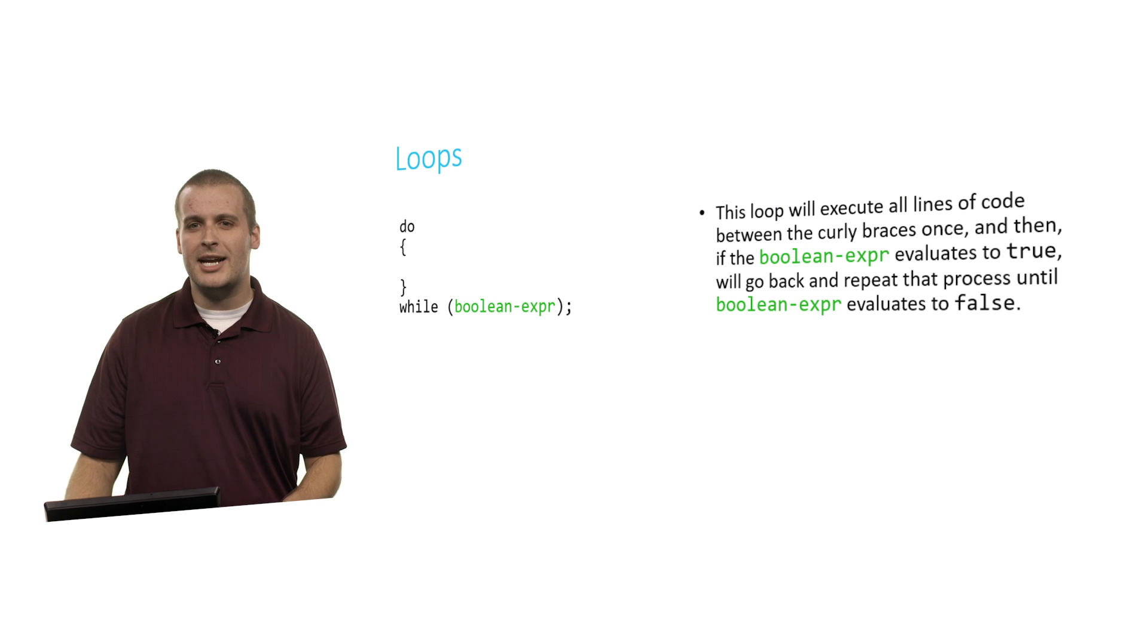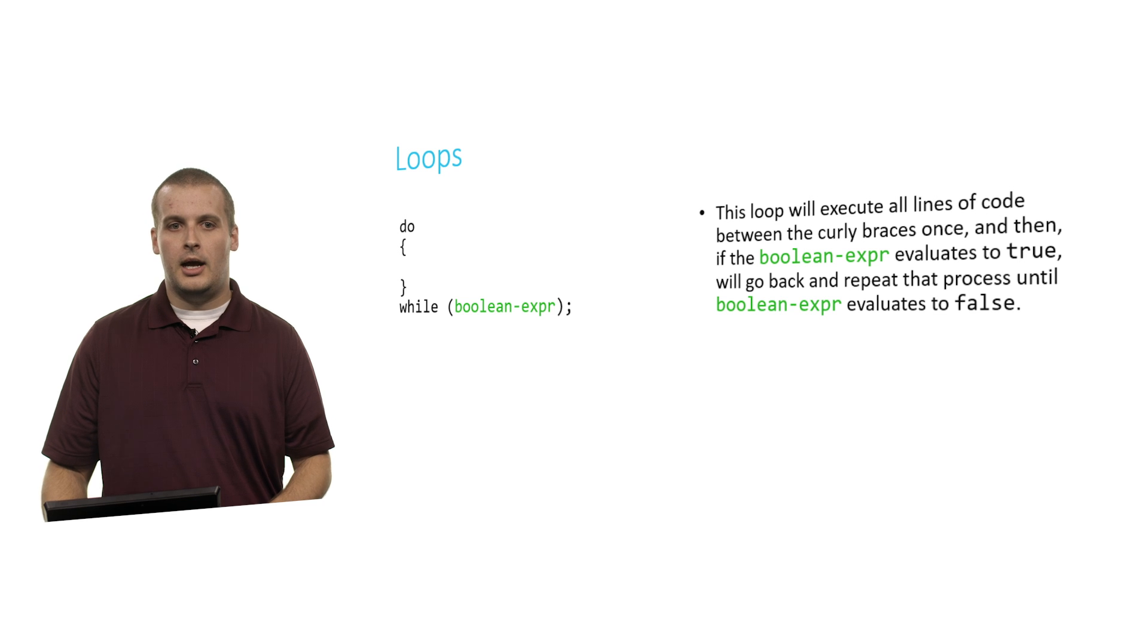The next kind of loop is actually pretty similar. It's called the do-while loop. This loop will execute all of the lines of code between the curly braces once, and then it will check the Boolean expression. If the Boolean expression evaluates to true, it'll go back, and it'll repeat that process over and over and over, until the Boolean expression evaluates to false. So this loop, unlike a while loop, is guaranteed to run at least one time. This could be pretty useful.